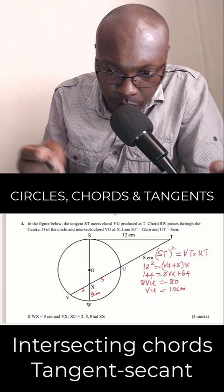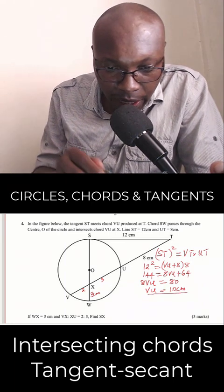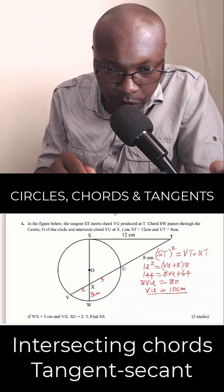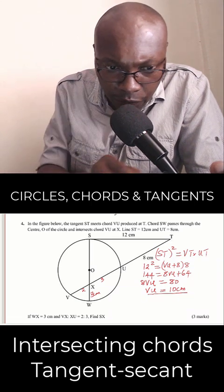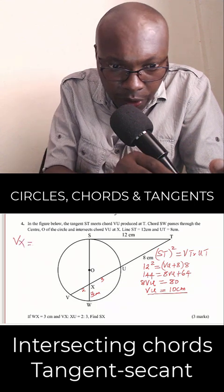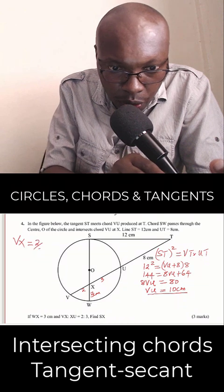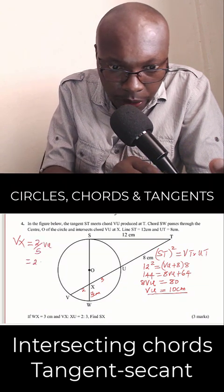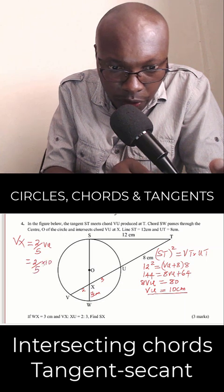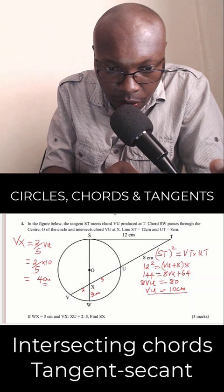Now we have VU. After getting VU, we can apply this ratio. Since X is dividing VU internally in the ratio 2 to 3, we can use that to get VX. VX will be, looking at that ratio, it will be 2/5 of VU. And this one will be 2/5 multiplied by VU, which is 10, and this will give 4 centimeters.